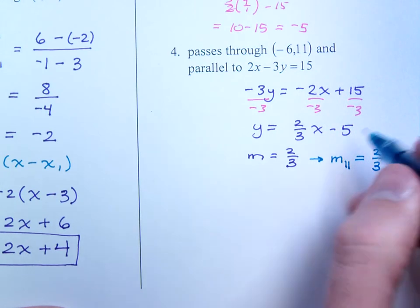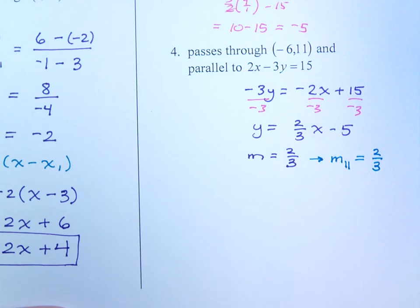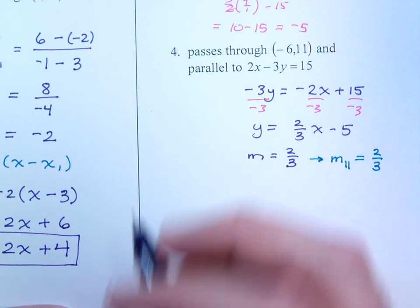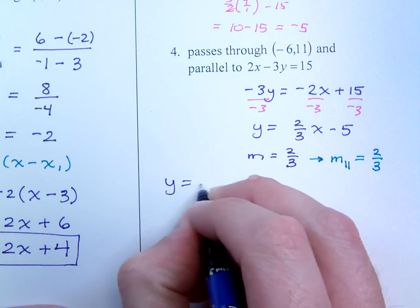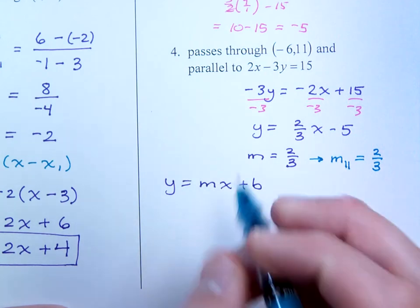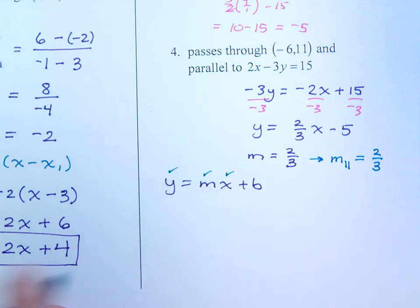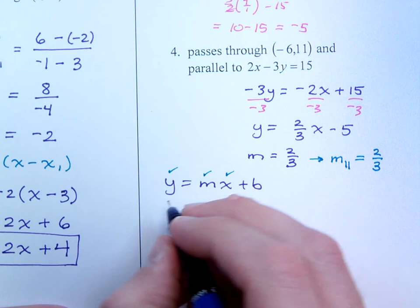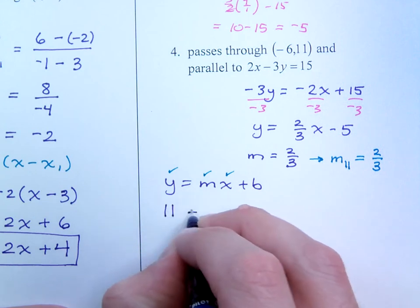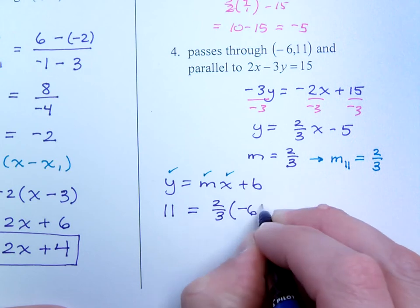So, I can use this, and I can use this point to find the equation of my line. Now, I'm kind of a fan of the slope-intercept form, so I'm going to go ahead and use this guy. We found the slope, and we have the x and the y coordinates for a point. So, plug in everything. See what you have. So, 11 is equal to 2 thirds times x, which is negative 6, plus b.